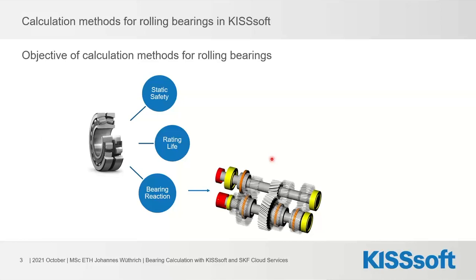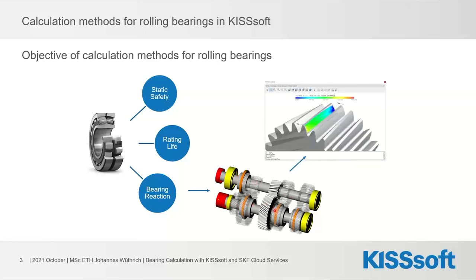This is especially important to KISSsoft users because they typically calculate shafts and bearings within a gearbox context — multiple shafts, multiple bearings, and gears on those shaft arrangements. When considering gears, one task is designing and sizing tooth modifications, and to do this properly the engineer really needs to know how the system is deforming and what the overall stiffness is.